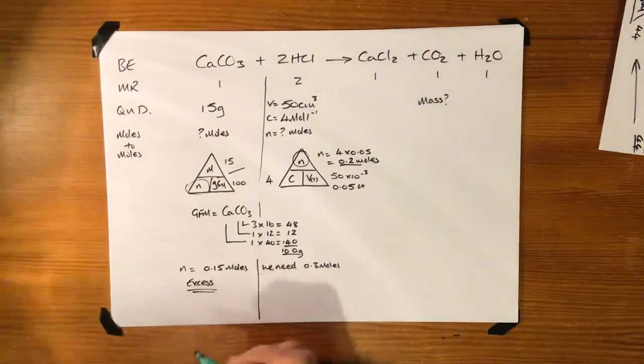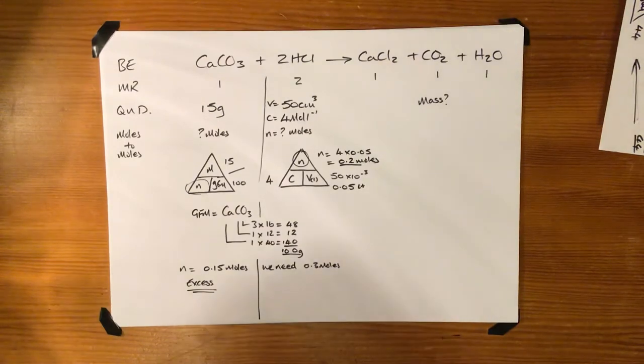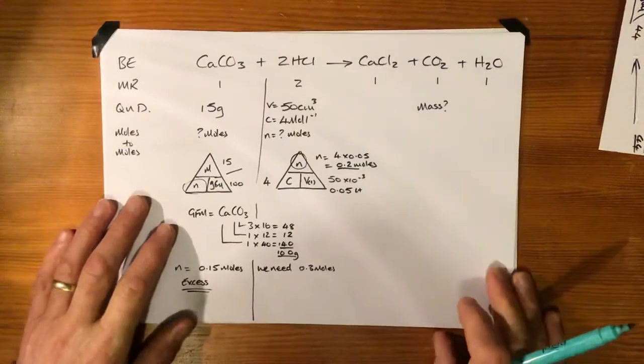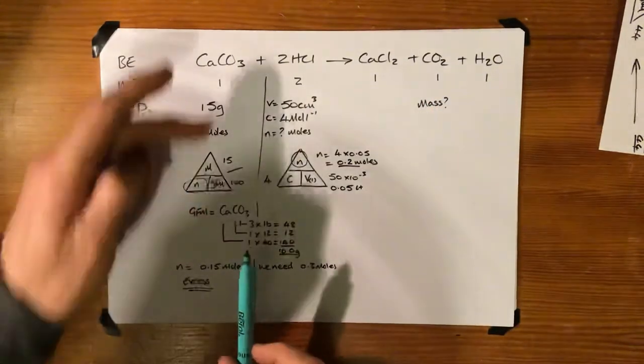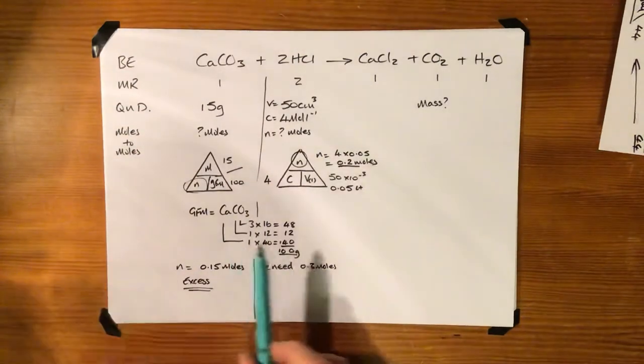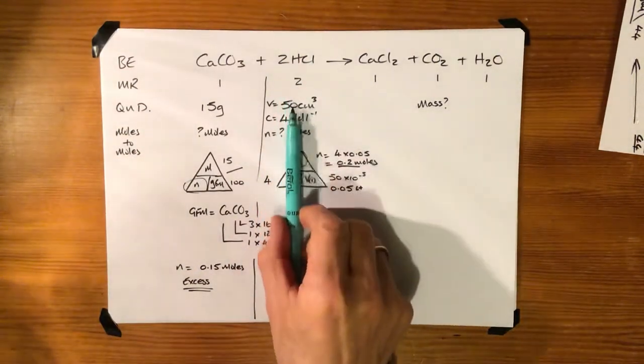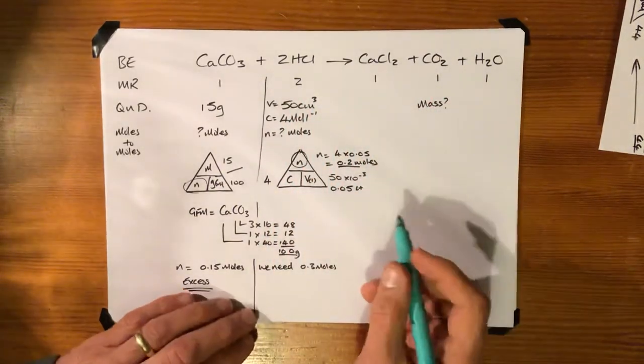Right, the calcium carbonate is in excess, so we can't use this to determine how much carbon dioxide is going to be formed. Because there's plenty of this, there's more than we need. This is the one that's going to determine how many moles of carbon dioxide is formed.